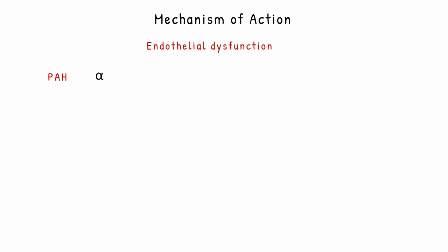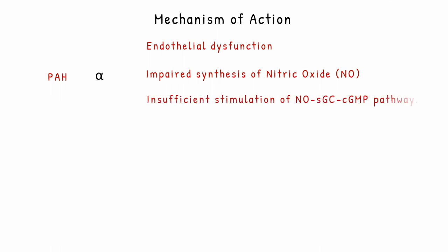Mechanism of action: Pulmonary arterial hypertension is associated with endothelial dysfunction, where the blood vessels get constricted, impacting synthesis of nitric oxide — an important molecule responsible for vasodilation — and resulting in insufficient stimulation of the NO-sGC-cGMP pathway.